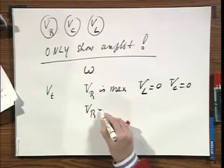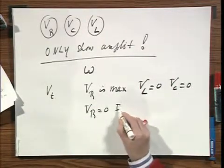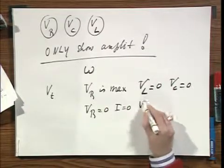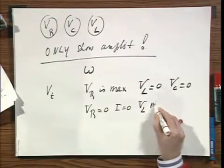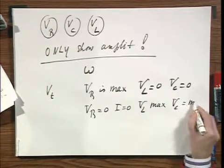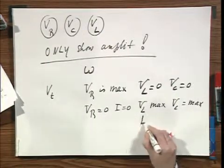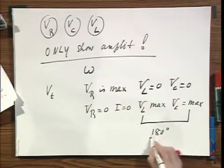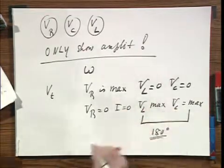And when VR were zero, that means when I is zero, VL would read a maximum value and so would VC, would also read a maximum value, even though these two would be 180 degrees out of phase. All that is lost here.